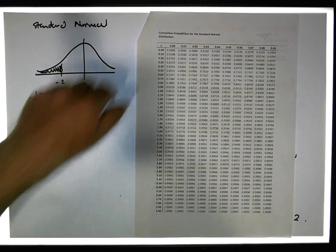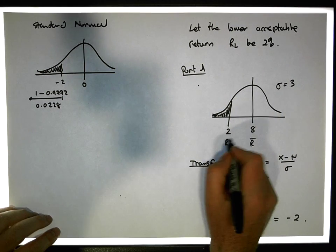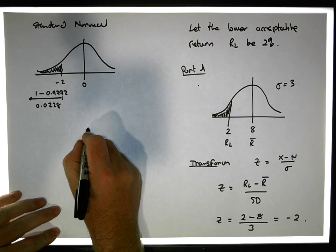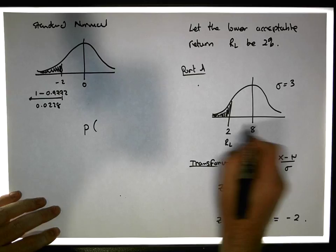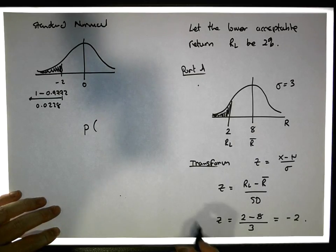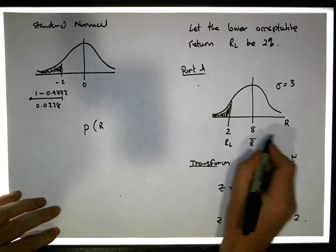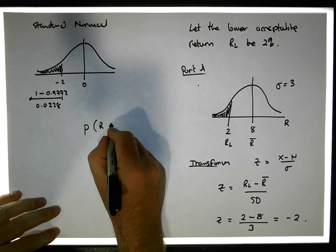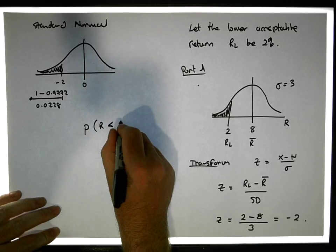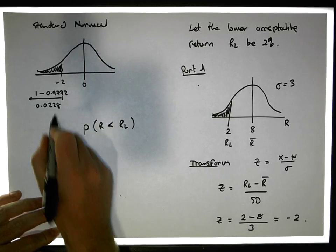So actually, in this case here, what we're really saying is the probability of us observing a return that's less than this RL. And in this case, it is the probability of us observing a return of portfolio A less than 2.